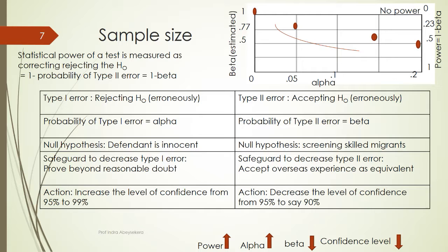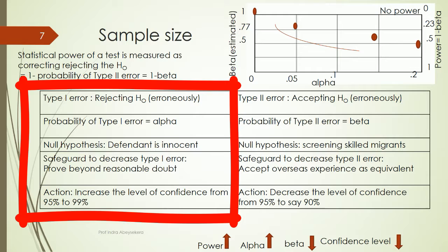In Type 1 error, we erroneously reject the null hypothesis. An example of this is in code of law, where the null hypothesis is that the defendant is innocent — this is to safeguard innocent people from being convicted. This requires a very high level of confidence. To decrease the Type 1 error, we increase the confidence level — for example, from 95% to 99% — so that alpha becomes 1%.